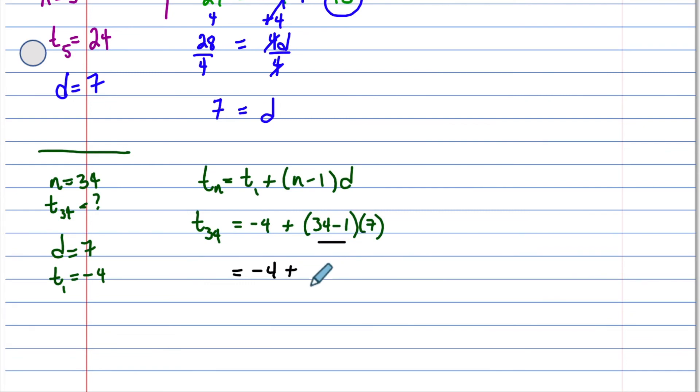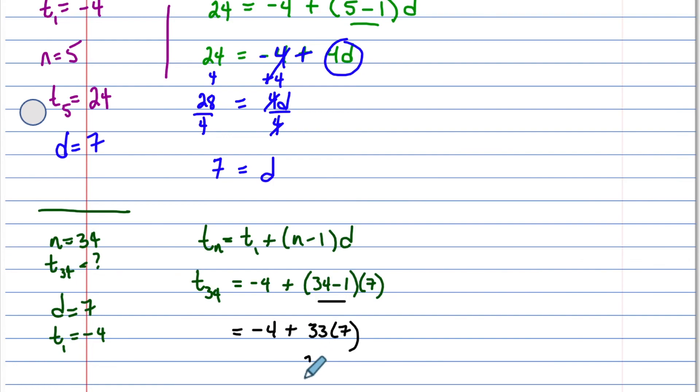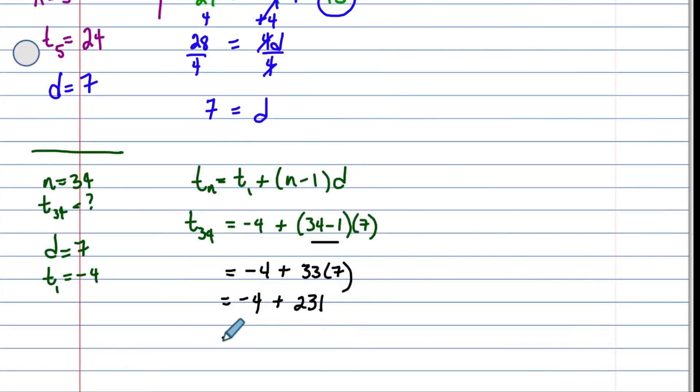We're going to do the brackets first. So we have a 33, and then times the 7. 33 times 7, 231, plus a negative 4. And when you combine these two values, you actually get 227.